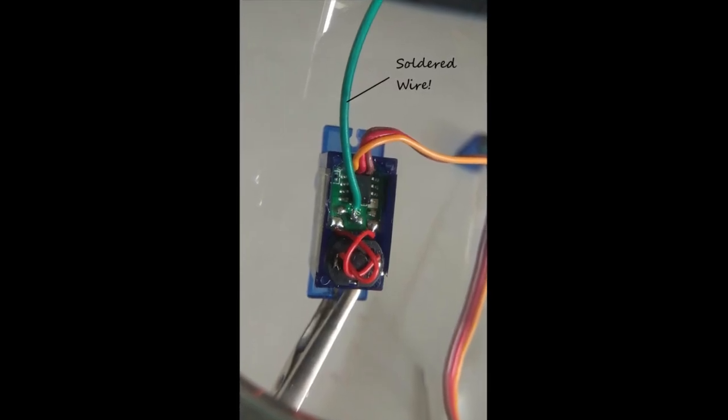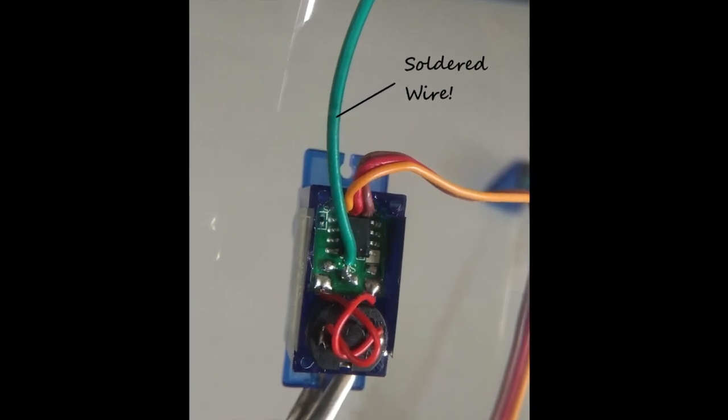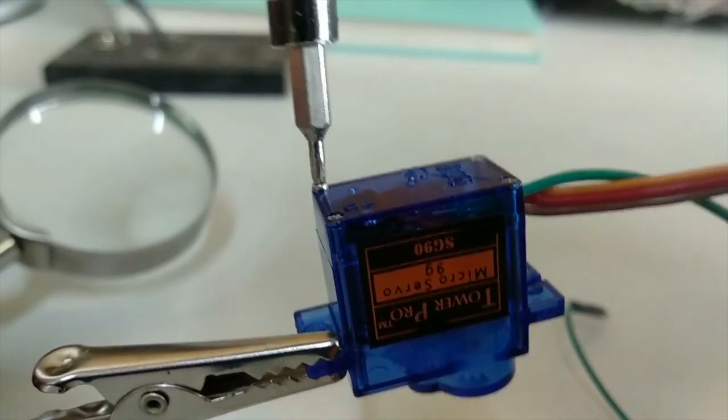Having located the center pin of the potentiometer, we need to solder a piece of wire which we can later connect to the Arduino for reading analog values, and then you can wrap up the servo.